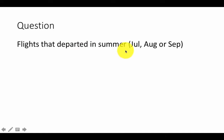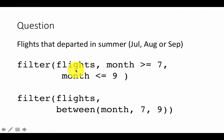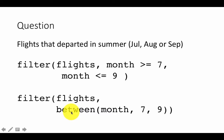To filter flights that departed in summer — July, August, September, which are months 7, 8, and 9 — we can say filter(flights, month >= 7, month <= 9), using a comma which implicitly means AND. Or we could use the between function: filter(flights, between(month, 7, 9)). Use %in% for discrete values, but when you have a continuous range and want any value in between, you can use the between function.